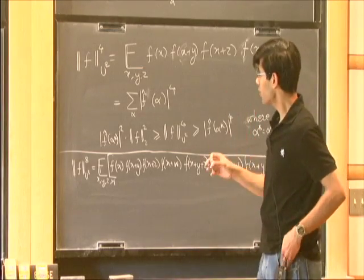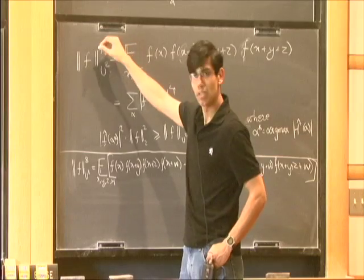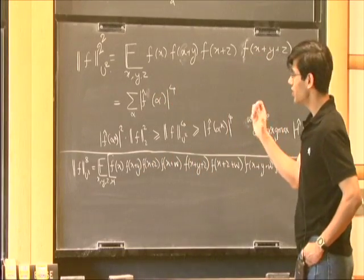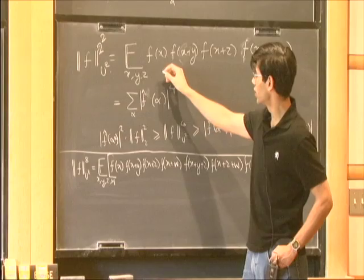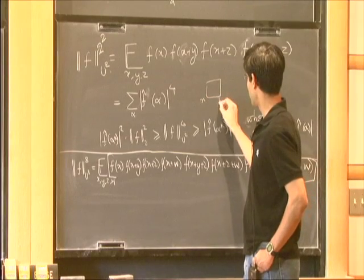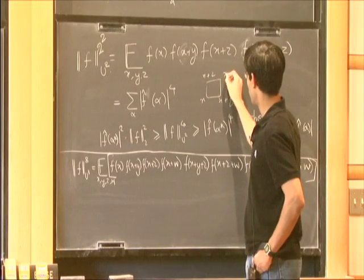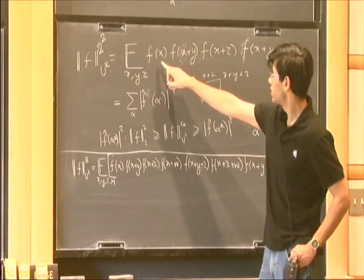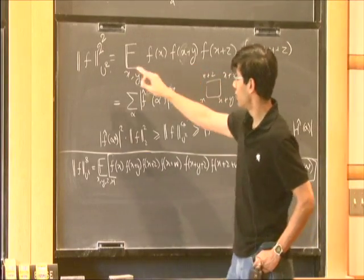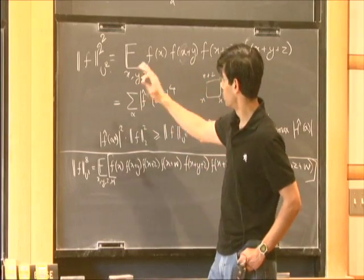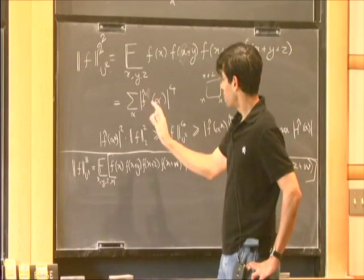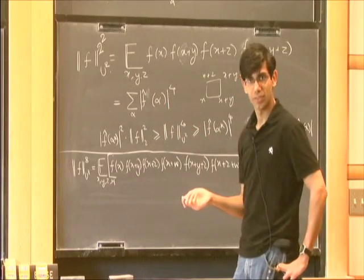For a function, we define its U2 norm. I'll write it as the fourth power, or 2-to-the-2 power, suggestively. It's the average of the function over two-dimensional boxes — two-dimensional parallel pipettes — for which the endpoints are x, x+y, x+z, x+y+z. I multiply the values of f over the endpoints of this box, and this is the fourth power of the U2 norm, because you want it to grow linearly with scaling. By some manipulations, this equals the sum of fourth powers of the Fourier coefficients for the U2 norm.